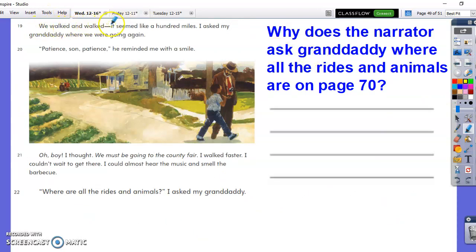We walked and walked. It seemed like a hundred miles. I asked my granddaddy where we were going again. Patience, son, patience, he reminded me with a smile. Oh, boy, I thought. We must be going to the county fair. I walked faster. I couldn't wait to get there. I could almost hear the music and smell the barbecue. Where are all the rides and animals? I asked my granddaddy. Why does the narrator ask granddaddy where all the rides and animals are on page 70?